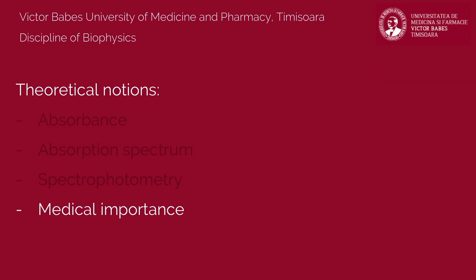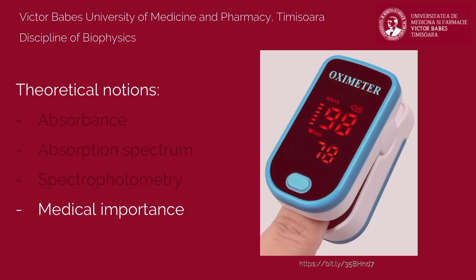Spectrophotometry is also employed to measure, in vivo and non-invasive, the concentration of oxygenated and reduced hemoglobin, through a specific method called pulse oximetry.